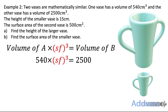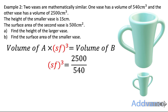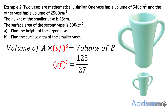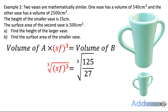The volume of A is 540 and the volume of B is 2,500. We put those into the formula, divide by 540, and get 2,500 over 540, which simplifies to 125 over 27. So the scale factor cubed equals 125 over 27. We cube root both sides — the cube root button on your calculator is shift and then the square root button — and we get 5 over 3. Make sure you can type that into your calculator and get 5 over 3.